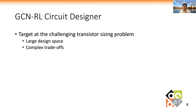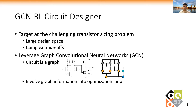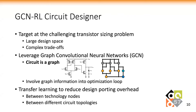We target the challenging transistor sizing problem, which has a large design space and complex performance trade-offs. We leverage graph convolutional neural networks to involve topology information into the optimization loop, inspired by the fact that circuit topology is a graph. Transfer learning between technology nodes and different topologies is also explored to reduce the design porting overhead.